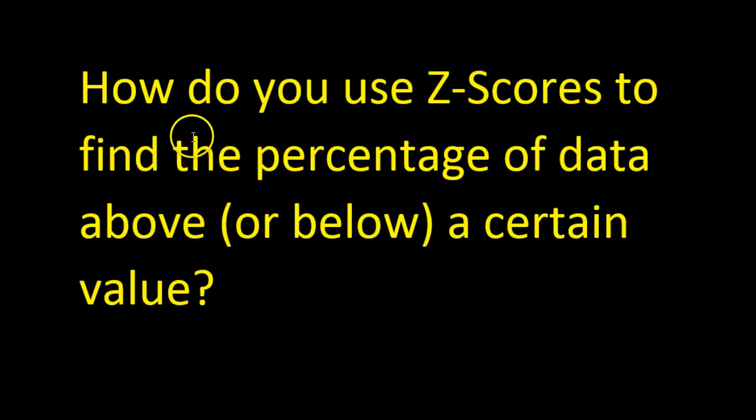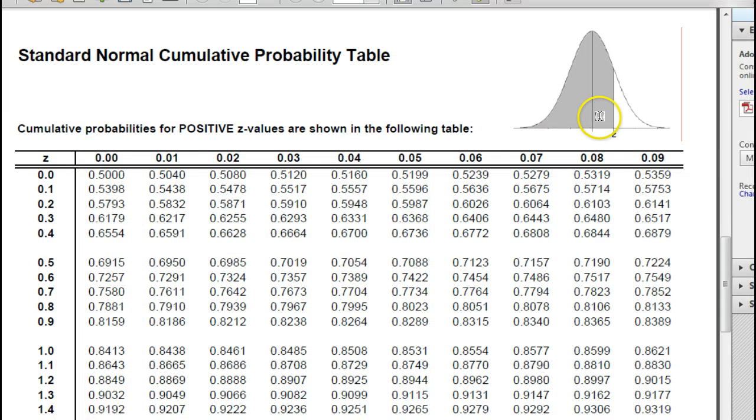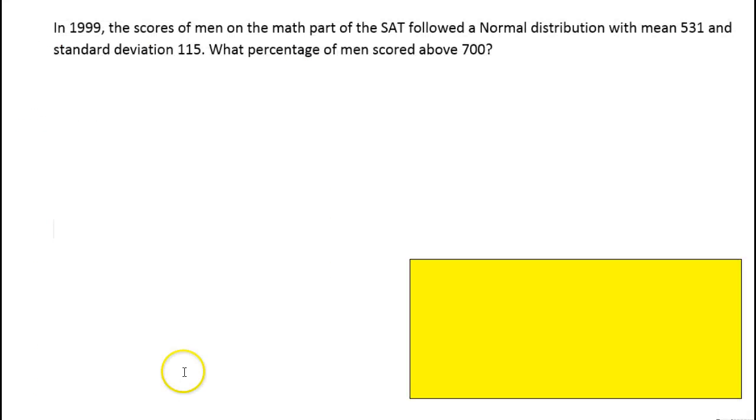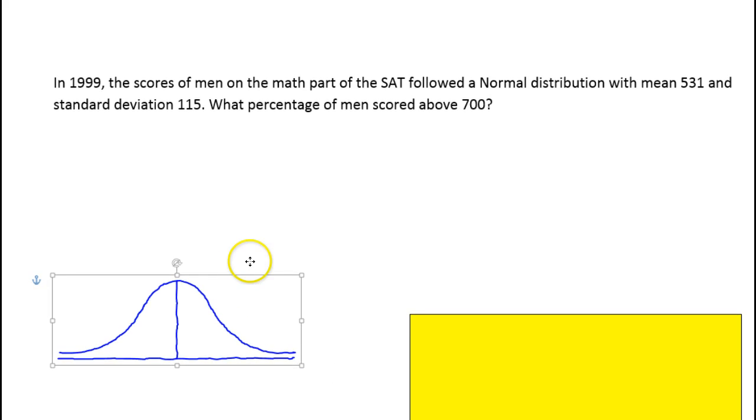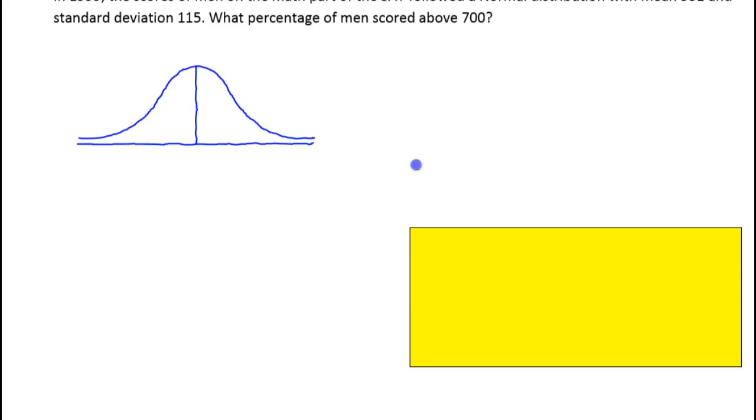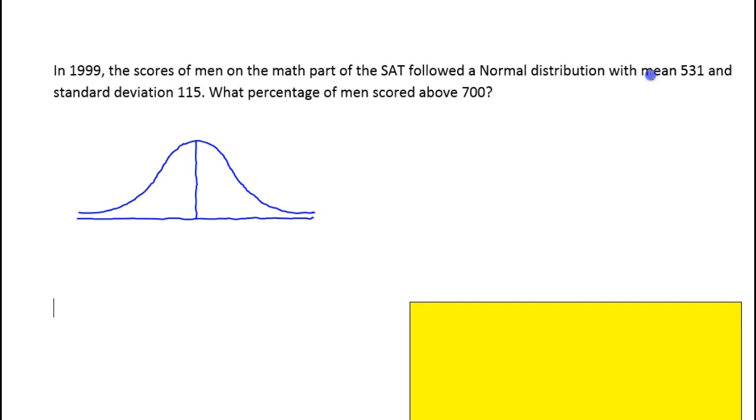In this video, I'm going to show you how you can use Z-scores to find the percentage of data above or below a certain value. You will need a Z-score table, such as this, to solve this problem. In 1999, the scores of men on the math part of the SAT followed a normal distribution, meaning a bell curve, with a mean of 531 and a standard deviation of 115. What percentage of men scored above 700?